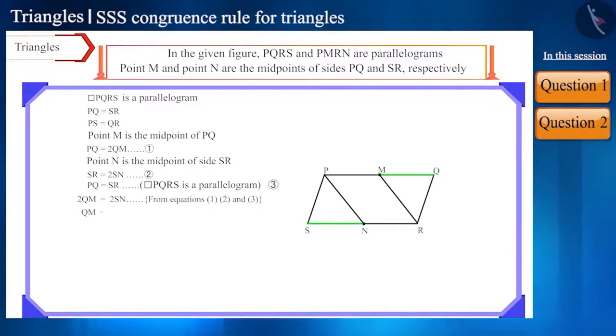Now we got QM as equal to SN. And since PMRN is a parallelogram, its opposite sides will be equal. This means side PM is equal to side NR and side PN is equal to side MR. Friends, look carefully. Now we can say that in triangle PSN and triangle RQM, all three sides are equal.